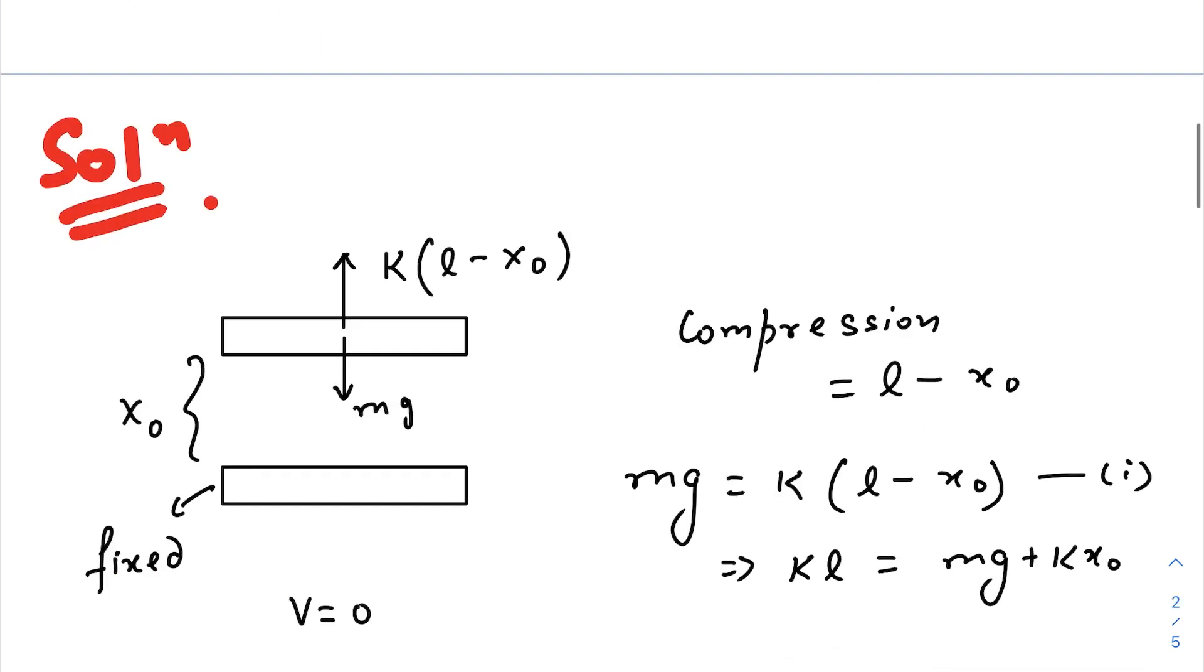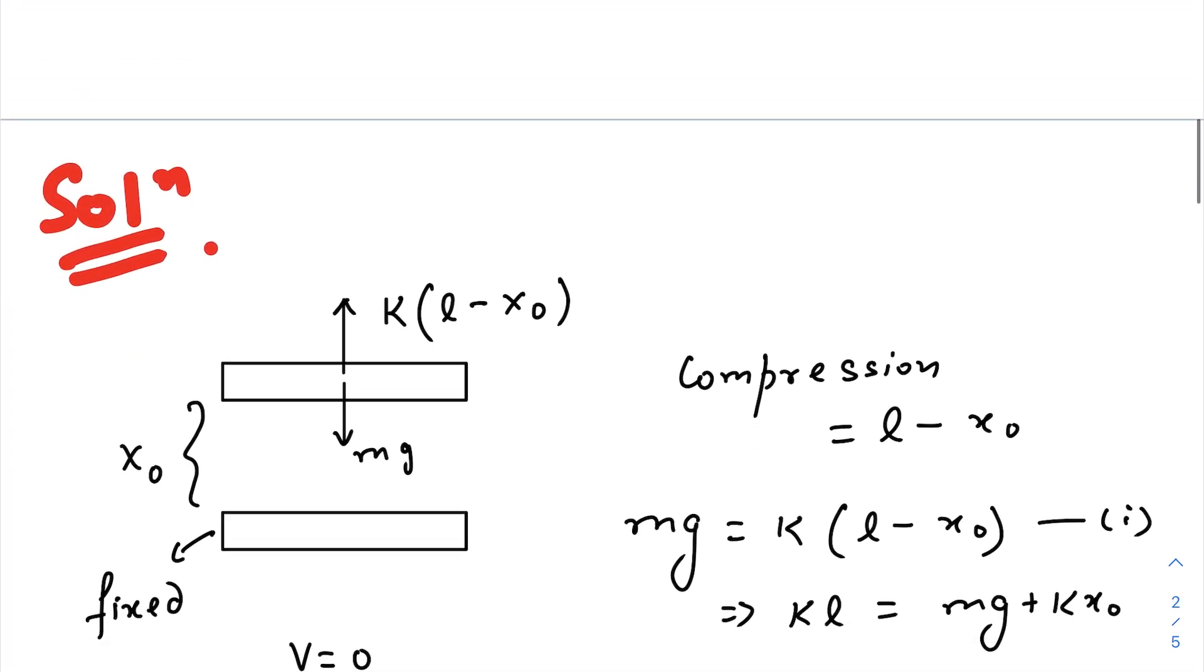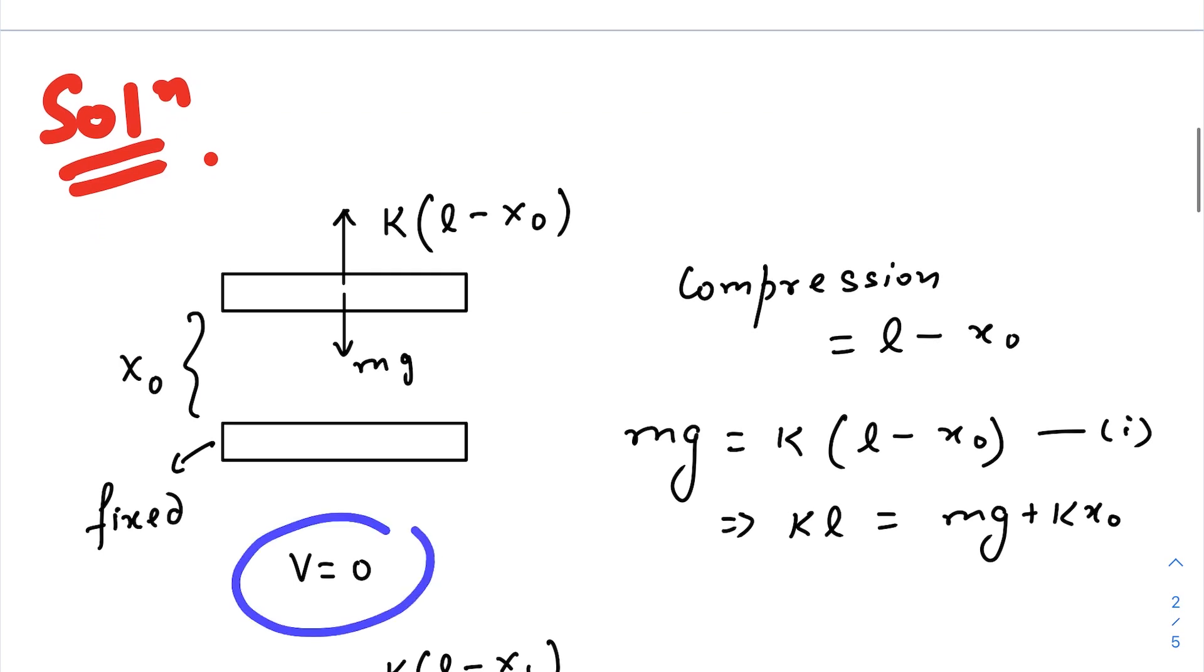So the voltage applied to the plates V is how much? First of all, we need to find out the expression for V. So let's get to the solution. When there was no V, I mean V equals to zero, the equilibrium condition for the upper plate is mg is acting downwards.